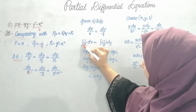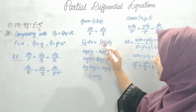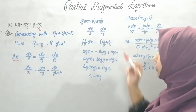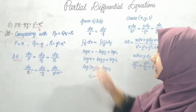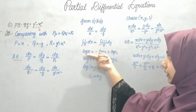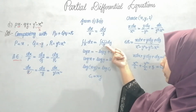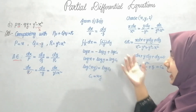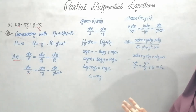Now I need to integrate: (1/x)dx equals (minus 1/y)dy. Integrating both sides: log x equals minus log y plus log C1.